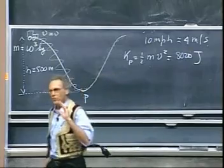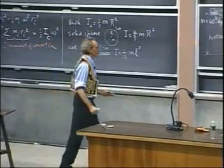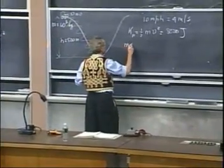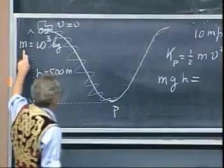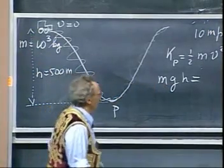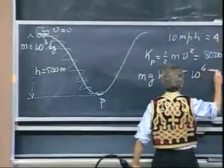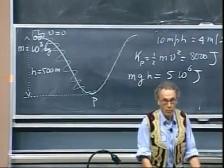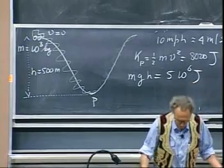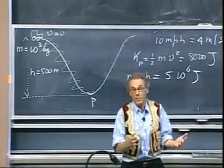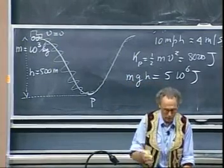Now compare this with the work that gravity did in bringing this car down. That work is mgh, and mgh is a staggering number: a thousand times ten times five hundred, that is five million joules. All of that was converted to heat using the brakes. It actually even gives you wear and tear on the brakes. So who needs it? Is there perhaps a way that you can salvage it? Or maybe not all of it, maybe part of it.